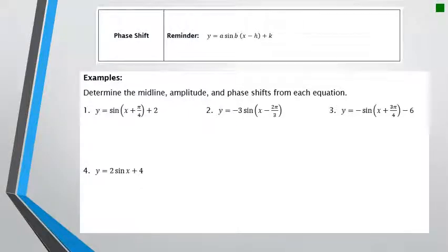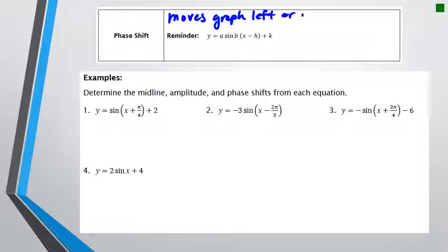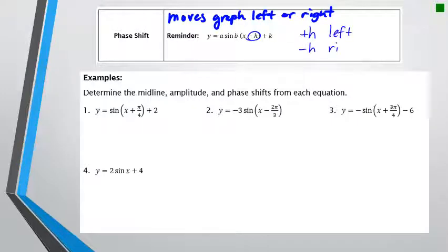In this lesson we're going to talk about graphs that have a phase shift. A phase shift is a shift that moves the graph left or right — basically a horizontal shift. It's determined by the h number. The minus is part of the formula, which is why it's backwards from what you'd think: a plus h moves the graph left, and a minus h moves the graph right.